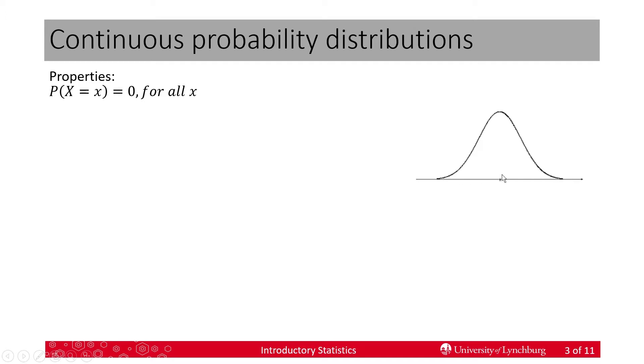And since it's continuous, then this line, between any two points on this line, there are an infinite number of values. So, if I take one and divide it by infinity, I end up with zero. So, that's one way to understand this.